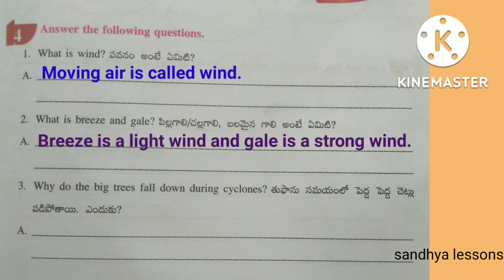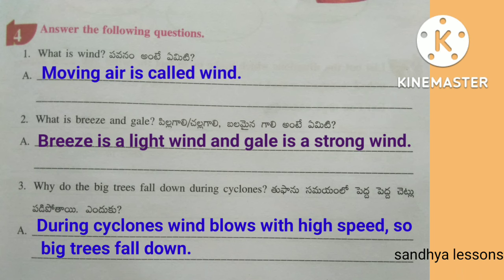Fourth, answer the following questions. What is wind? Moving air is called wind. What is a breeze and gale? Breeze is a light wind and gale is a strong wind. Why do the big trees fall down during cyclones? During cyclones, wind blows with high speed, so big trees fall down.